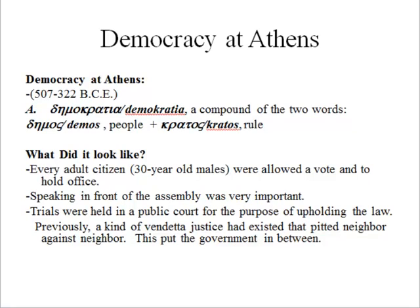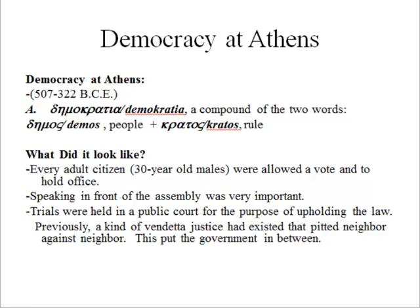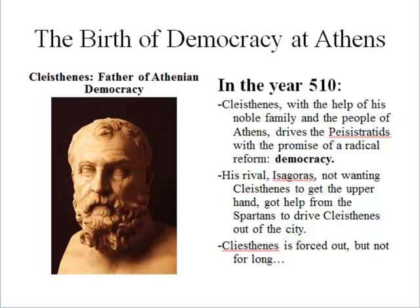After they were kicked out, the emergence of democracy happened in Athens. Reforms were made. Athenian democracy meant every adult citizen — males who were 30 years of age or older — were allowed to vote and hold office. Speaking in front of the assembly was very important, and trials were held in public court for the purpose of upholding the law. Previously, a kind of vendetta justice had pitted neighbor against neighbor. The man who brought democracy to Athens was Cleisthenes, helped by his noble family and the people of Athens in driving the Pisistratids out.